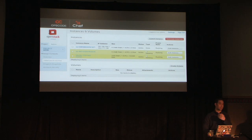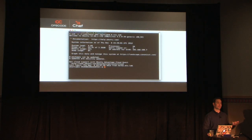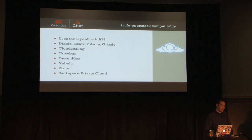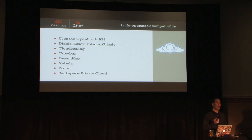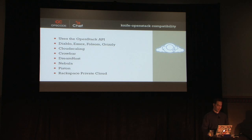Knife OpenStack server create shows up in the dashboard — SSH into the box 30 seconds later and your box is up and ready. Knife OpenStack has been tested with Diablo through Grizzly trunk. It uses the OpenStack API, not the EC2 API — if you need that, we have Knife EC2. It's by far the most complex of the cloud plugins because OpenStack supports so many heterogeneous types of environments — private networks, public networks, multiple networks, named networks, Windows, Linux. You can also bootstrap Windows nodes.